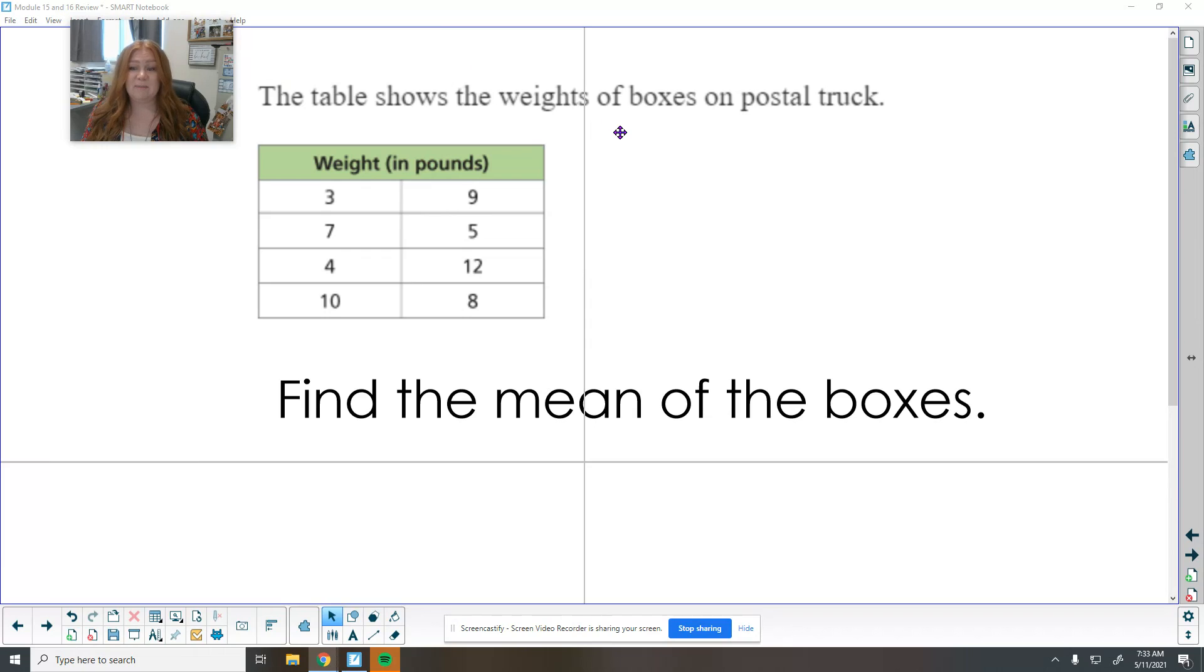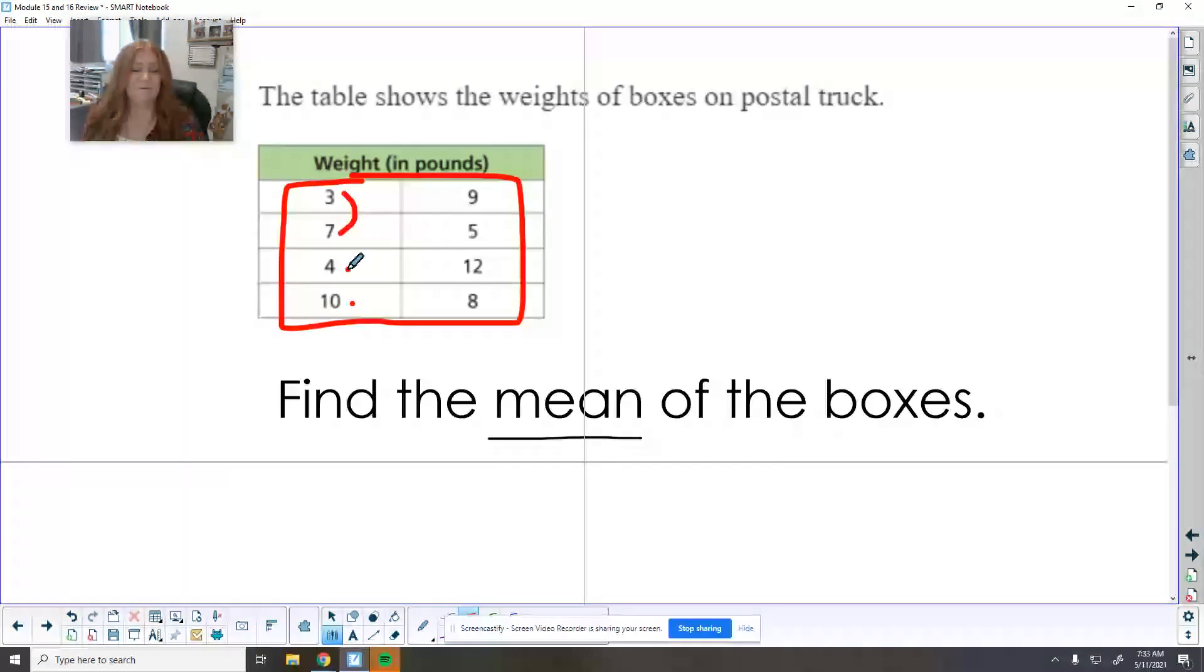This table shows the weight of boxes on a postal truck. So we want to find the mean of the boxes. So go ahead and add these up. So here I can see 10 and 10 is 20, 24 and here is eight more is 32 plus 12 is 44, five more is 49, nine more is 58. So we have 58 pounds in boxes. And I have eight numbers that we added up. So we're going to divide that by eight.